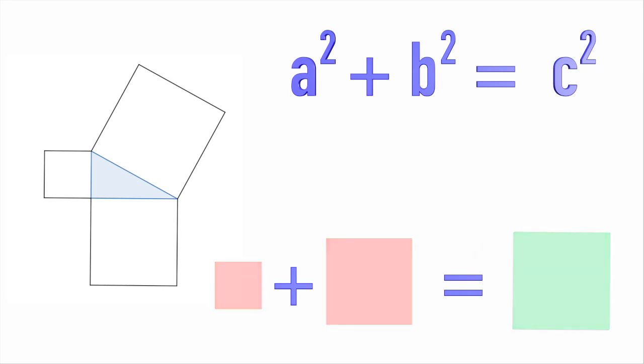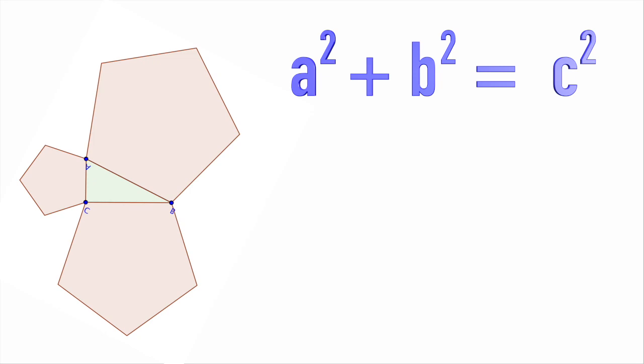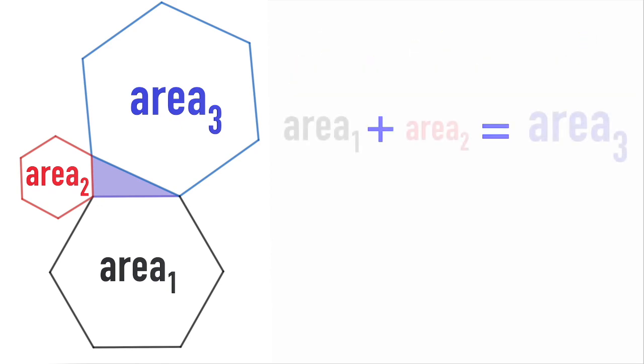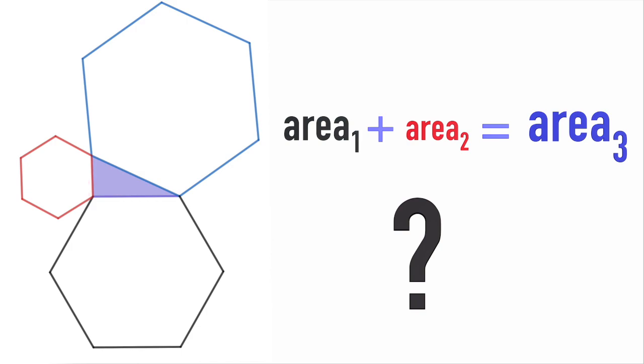But what if I told you that you can have pentagons, hexagons, or other polygons built instead of squares? Will the areas of these shapes still add up? Keep watching to learn about the most intuitive proof of the Pythagoras' theorem.